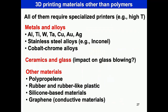Other than polymers, metals and alloys are available: aluminum, titanium, copper, gold, silver, stainless steel alloys, cobalt-chrome alloys, etc. - these are all being printed. They typically require high temperatures. Ceramics and glass are another category. Other materials include polypropylene, rubber, rubber-like plastic, silicon-based materials such as PDMS and Ecoflex, and there are also graphene or graphene-based formulations and conductive materials being explored.